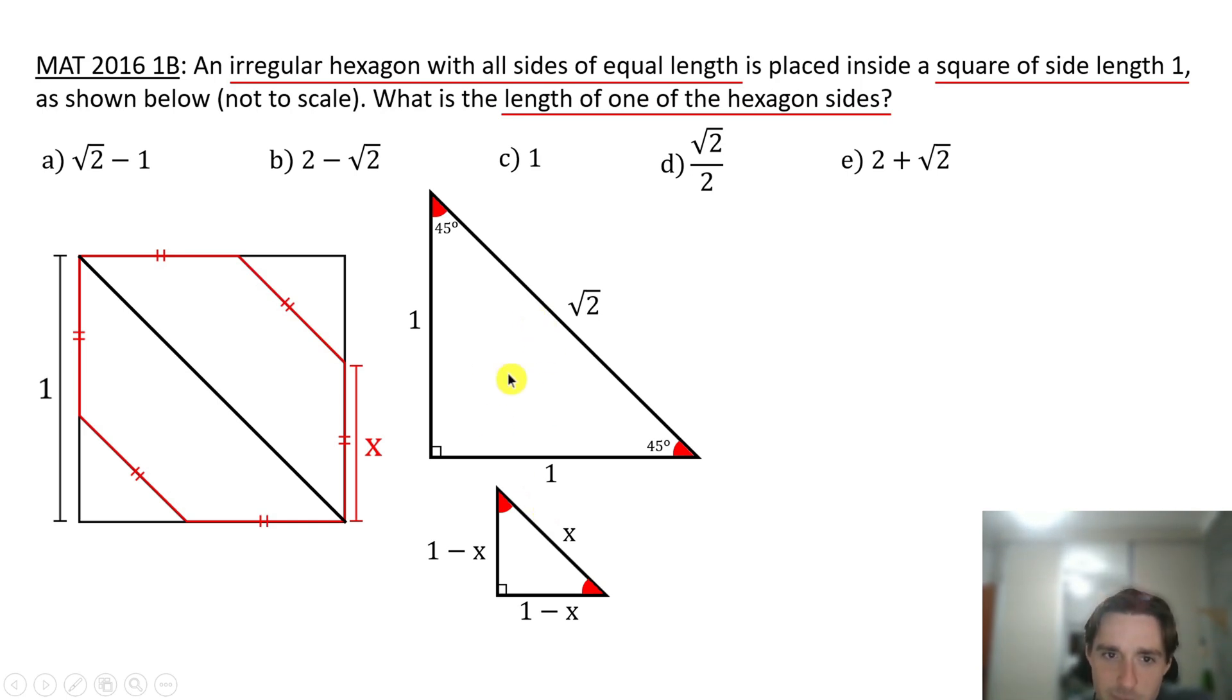So guess what? These two triangles are similar and we are going to apply triangle similarity. This means that this side divided by the corresponding side in this triangle is equal to the hypotenuse of this triangle divided by the hypotenuse of the other triangle, which is square root of two divided by x. So let's make the cross multiplication. We are going to obtain that x equals square root of two times one minus x.